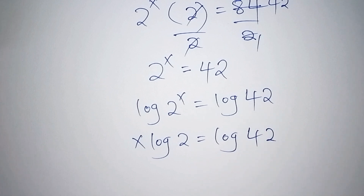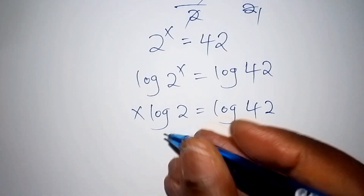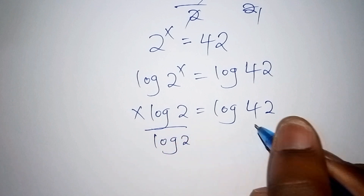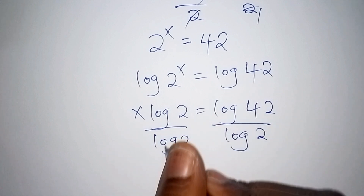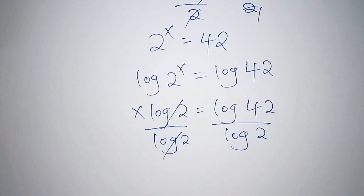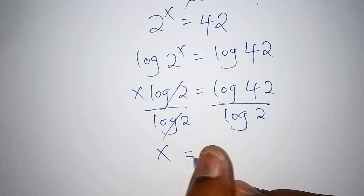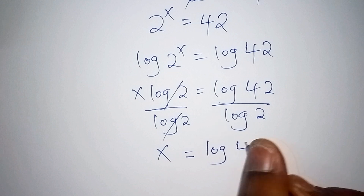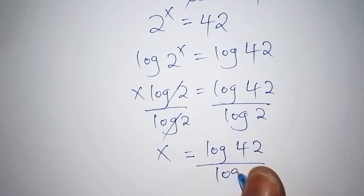We shall now divide both sides by log 2, so that the log 2 terms cancel, giving us x equals log 42 all over log 2.